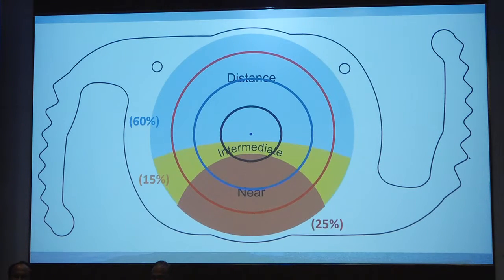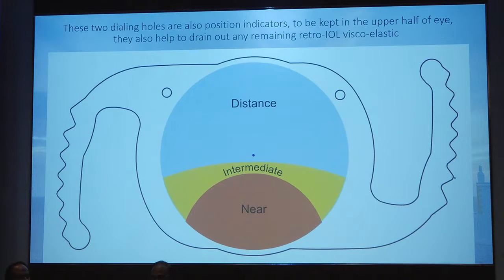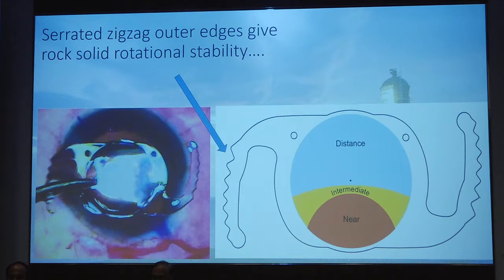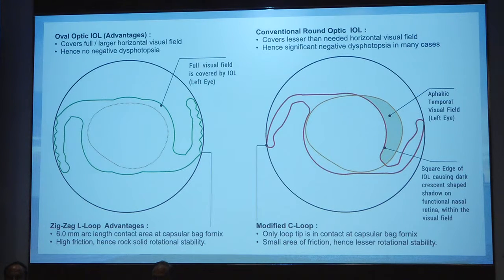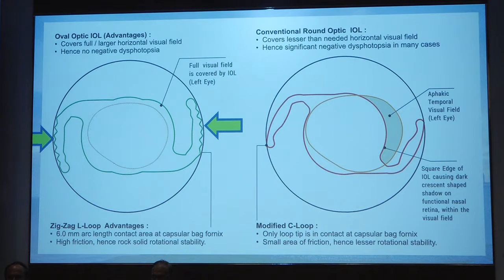Autofocus Pro uses gradient refractive index (GRIN) technology — no loss of light energy as with diffractive rings. The upper 60% of the optic is for distance, then intermediate, then near. At any pupil size, the ratio of light distribution remains the same — pupil independent. The two dialing holes are position indicators to be kept in the upper half of the eye, and also help drain retro-IOL viscoelastic. The lens must be oriented horizontally with the dialing holes at 12 o'clock.